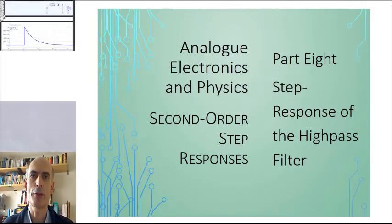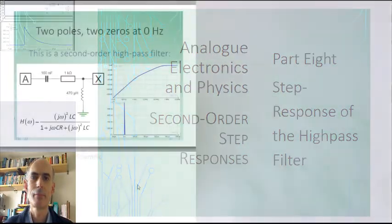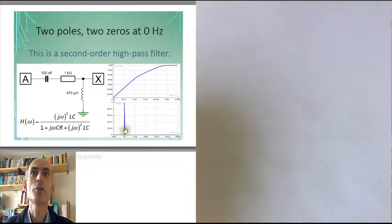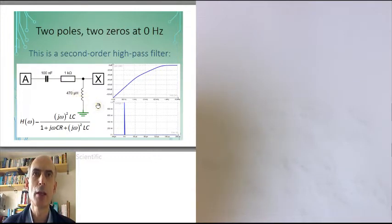This time I want to look at the high-pass filter. The high-pass filter, when you've got a series combination of a capacitor, resistor and inductor, is just the circuit where the output is taken as the voltage across the inductor.